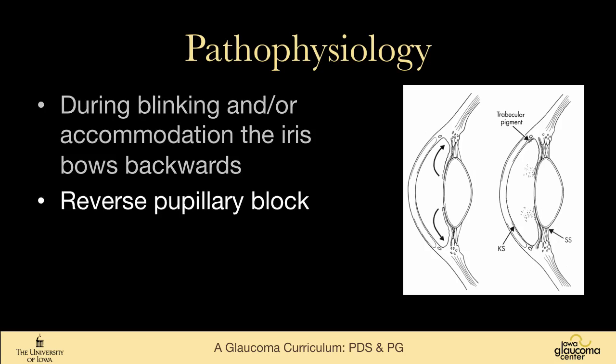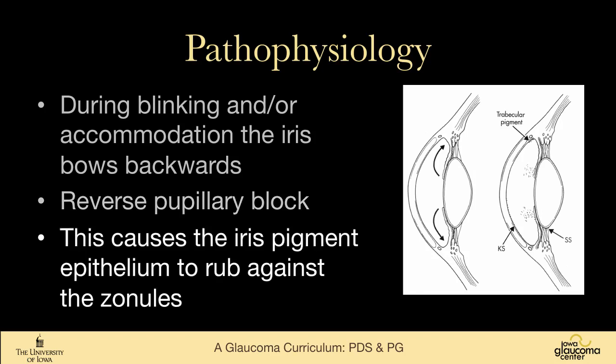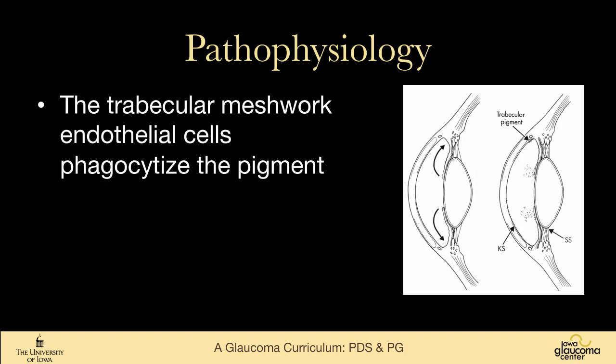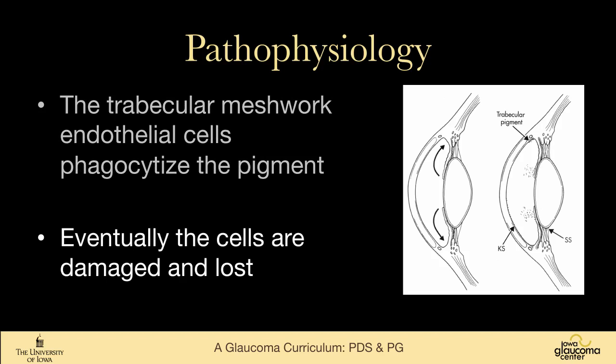This is considered to be reverse pupillary block, which causes the iris pigment epithelium to rub against the zonules. In the angle, the trabecular meshwork endothelial cells phagocytize this pigment. Eventually the cells can be damaged and lost, causing trabecular dysfunction and elevated intraocular pressure.